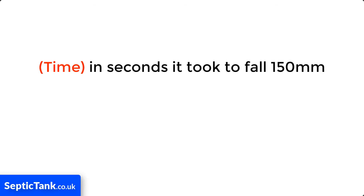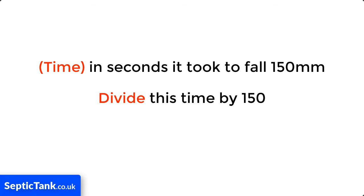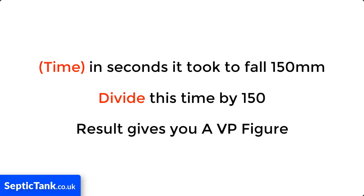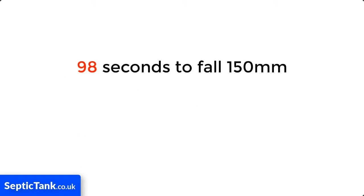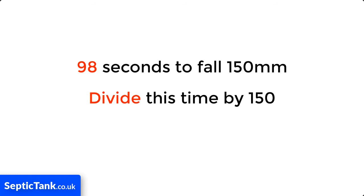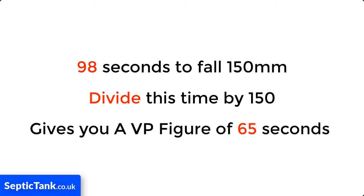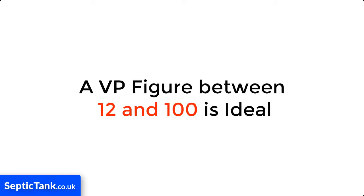So how do you calculate the percolation rate? It's really easy. You take the time it took in seconds for the water to fall 150 millimeters, then divide this time by 150. This result gives you a VP figure. For example, if it took 98 seconds for the water in the soakaway hole to fall 150 millimeters, you divide 98 by 150, giving you a VP figure of 0.65.